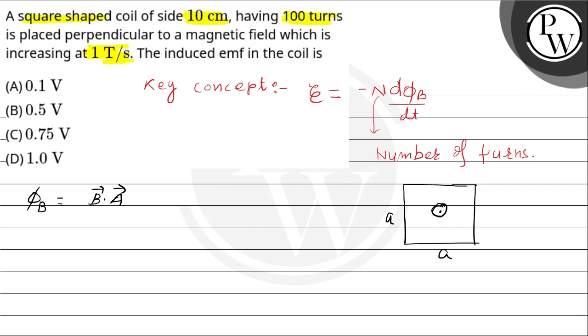So the angle between area vector of this loop and the magnetic field is in the same direction. So here it will be equal to B cos 0 degree. This is equal to B into A.